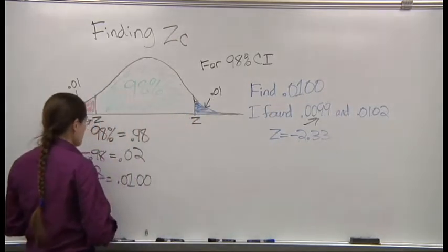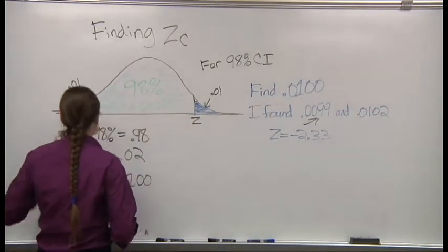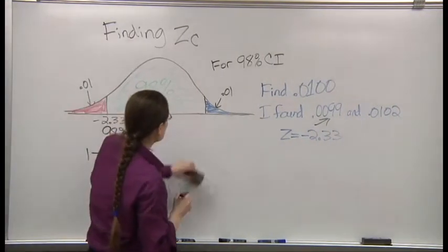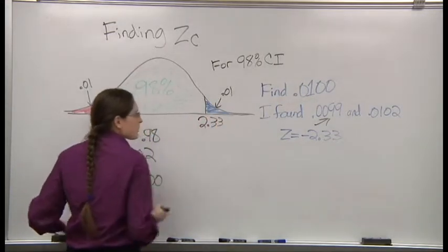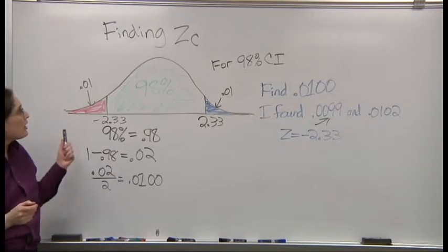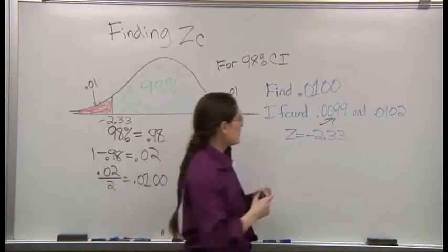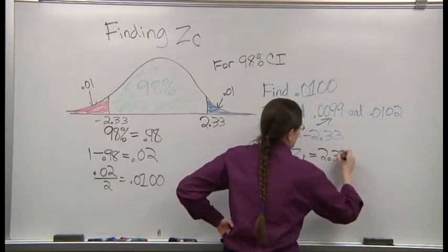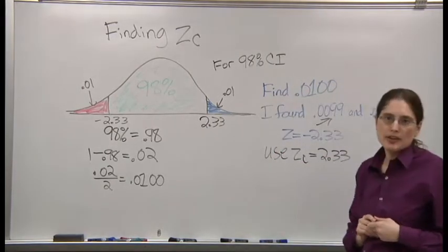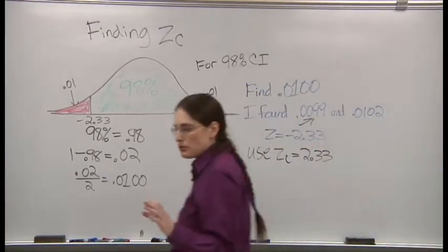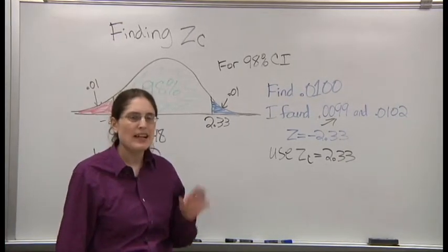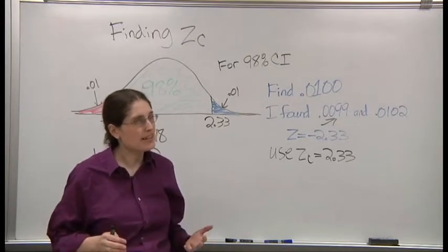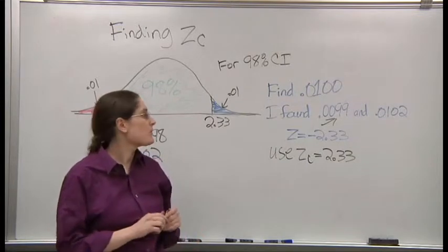Z equals negative 2.33. So this z here, negative 2.33. And this one is positive 2.33. So we're going to use the positive value. In the last chapter, it was really important whether your z was positive or negative. Now, you're going to be adding and subtracting it anyway. So it kind of doesn't matter.